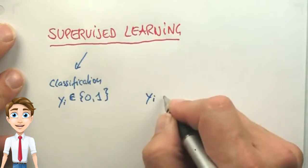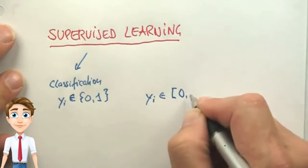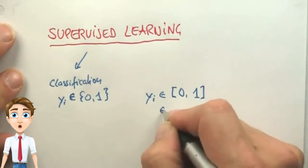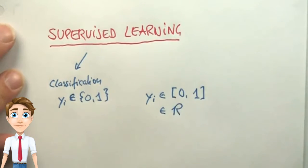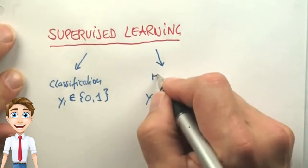In many problems, we try to predict a continuous quantity, for example in the interval 0 to 1, or perhaps a real number. Those machine learning problems are called regression problems.